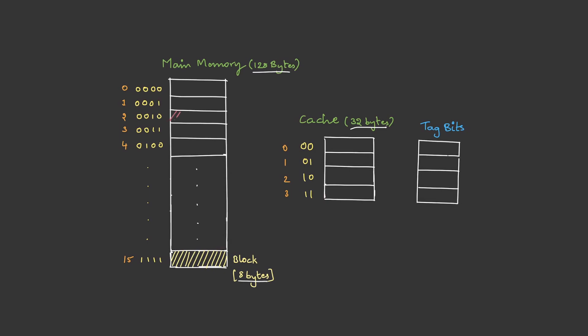Let's say I pick up block 2 and place it in line 0. Whenever a block is copied into the cache, the complete block index is placed in the tag bits.